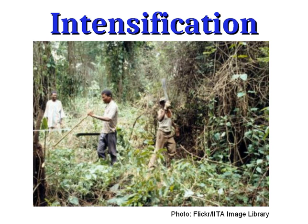This agriculture could be practiced at a very low level of intensification. Something like slash-and-burn agriculture — or shifting cultivation — is a system in which a certain area is cleared, the plant growth on it is burned, which creates nice fertilizer, releasing all of the nitrogen and other important elements that were locked up in that plant growth.